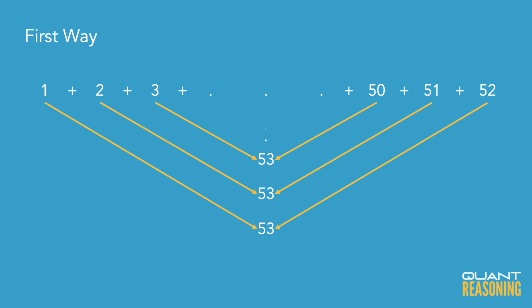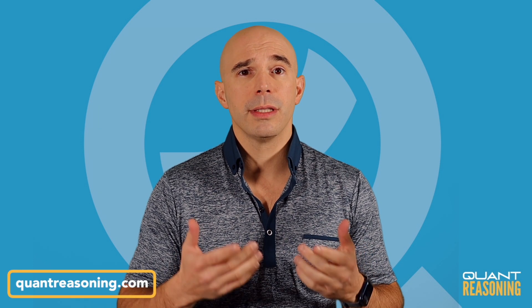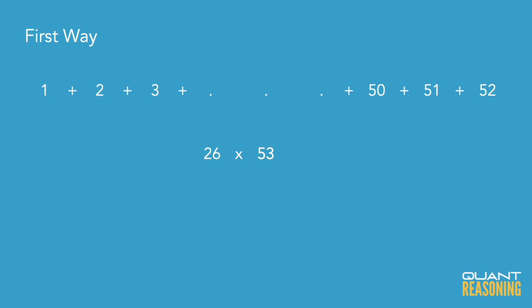One plus 52, two plus 51, three plus 50. That same process works all the way into the center, and you just end up with 26 pairs, each with a sum of 53. So when it's all said and done, the sum of all 52 numbers would be 26 times 53.